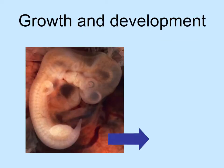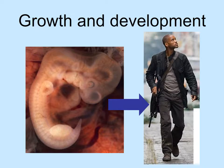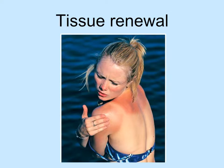Growth and development. This four-week-old human fetus will grow hundreds of times in size. Cells in the fetus will also need to differentiate into specialized cells, such as muscle and nerve cells, to produce a fully functioning human. And tissue renewal — cells must be constantly replaced due to cell death. Our skin cells divide about once a day to maintain the external barrier that protects our bodies.